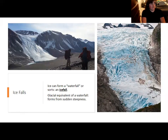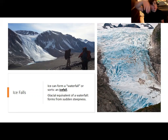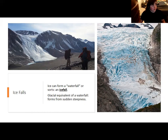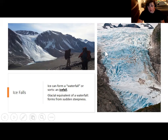Ice can form a stream the same way liquid water can. Glaciers can also form waterfalls of a sort. When the terrain suddenly becomes steeper — like when a glacier gets funneled through a gap in mountains and starts piling down the slope — that causes essentially a frozen waterfall, known as an icefall. It forms from sudden steepness the same way a liquid waterfall does, and it erodes the underlying rock the same way. Notice how full of cracks the ice is — those are crevasses.